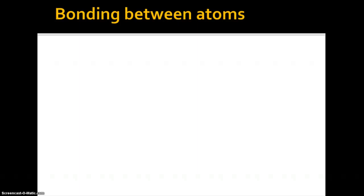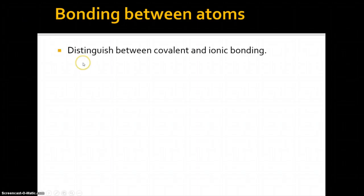Welcome to my Grade 11 review of chemistry. This is the fourth part in the series out of seven. This part is called 'From Compounds to Reactions' and we're going to start by discussing the bonding between atoms — in particular two kinds of bonding: covalent and ionic. So let's distinguish between the two.